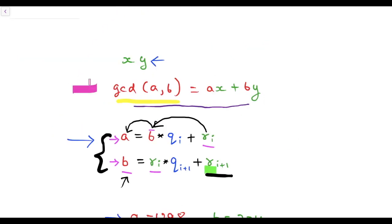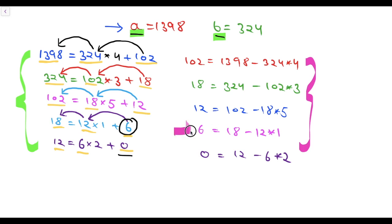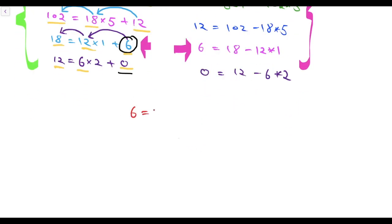Our main task is to get this equation where the left-hand side is the GCD of a and b and the right-hand side is the linear combination of a and b. You can see that this is the only step where the left-hand side is the GCD, because here the GCD is 6. So let's take this equation: 6 equals 18 minus 12 into 1. The important point is we should know which of these numbers are variables. Here 6, 18, and 12 are the variables, so let's underline them.